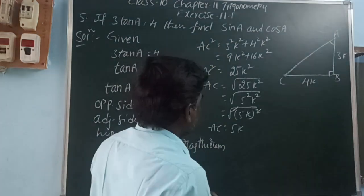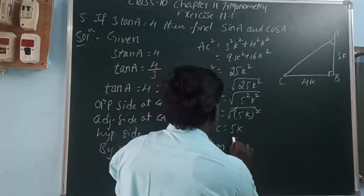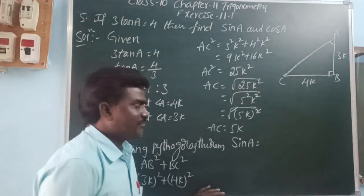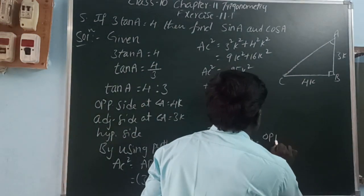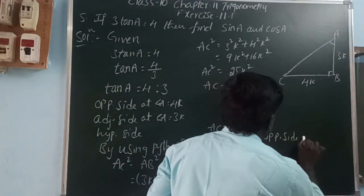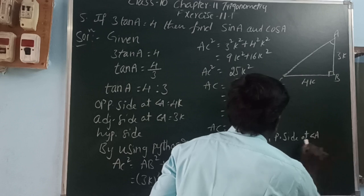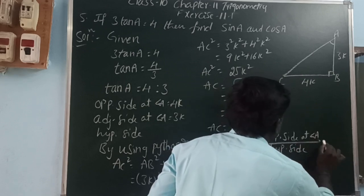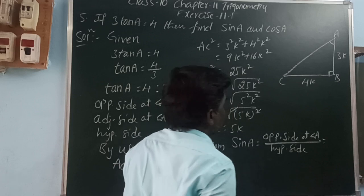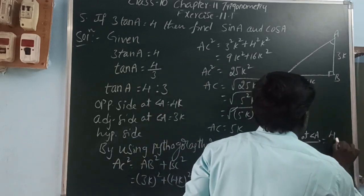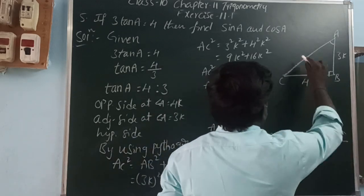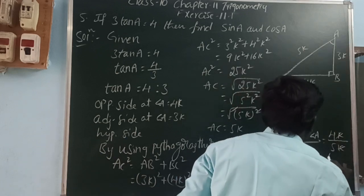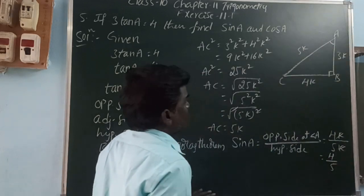Now, what is being asked: sin A and cos A. Sin A is the sine ratio at angle A, which is opposite side at angle A divided by hypotenuse. The opposite side is 4k and the hypotenuse AC is 5k. The k cancels, so sin A equals 4 by 5.